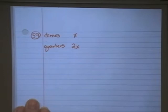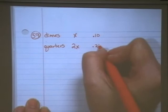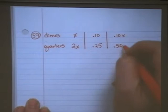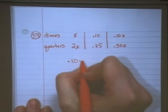A dime is worth 10 cents while a quarter is worth 25 cents. I make my little chart. I then multiply and I get .10x for my dimes and .50x for my quarters.